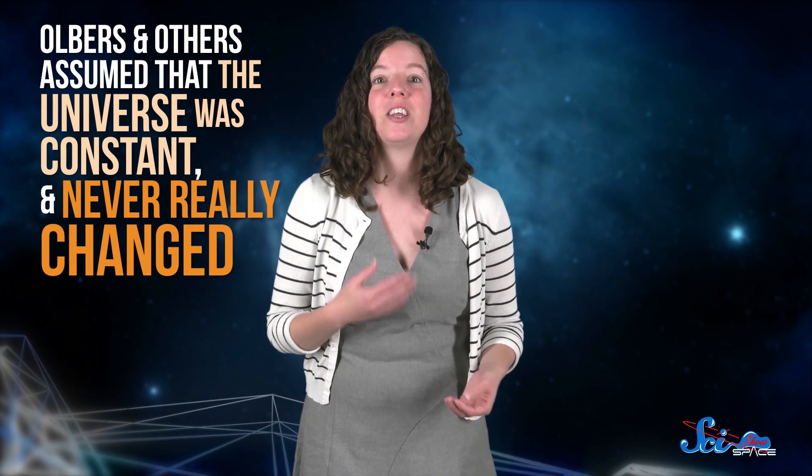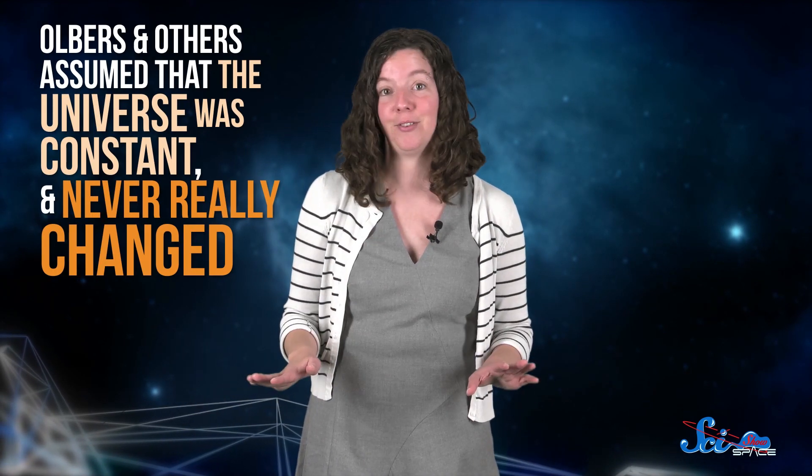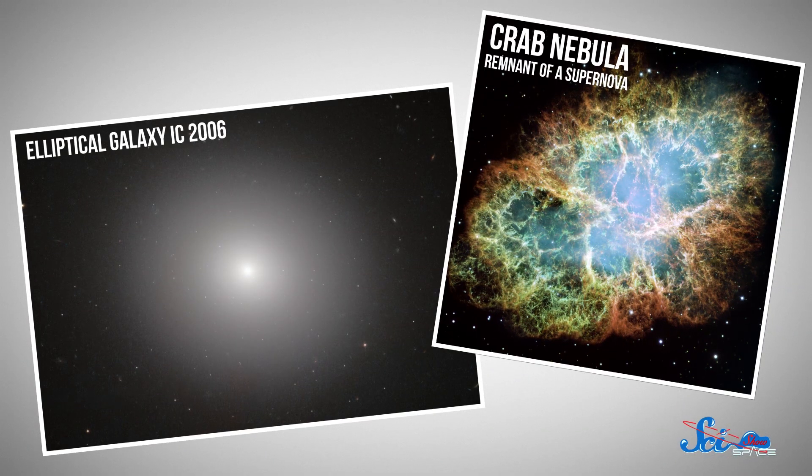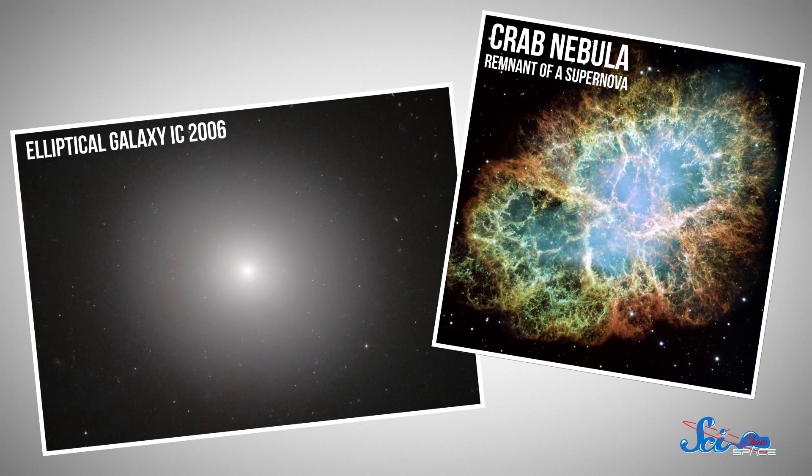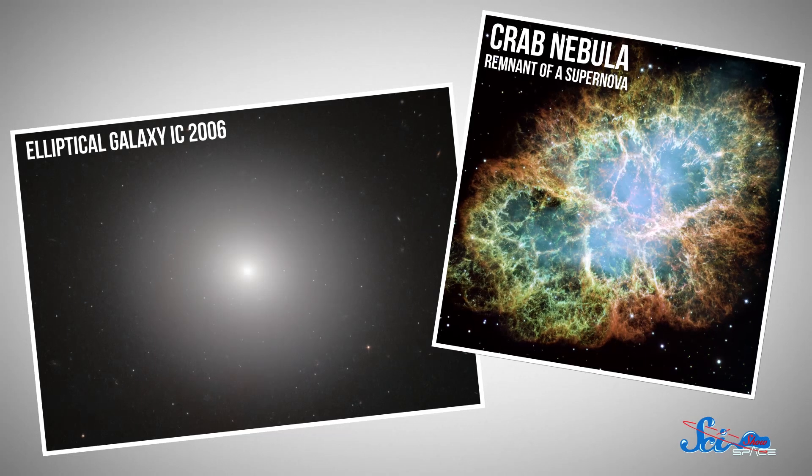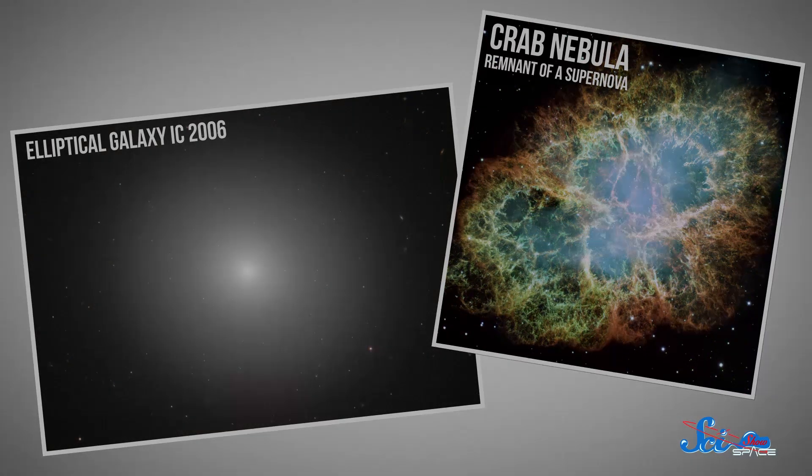Olbers and others assumed that the universe was constant and never really changed. But today we know that isn't true. Stars and galaxies have lifespans. They only stick around for so long. By the time the light from those super-distant galaxies reached you, the nearby stars would have long since died out. Which means you'd still be left with a situation where lots of the sky is dark.